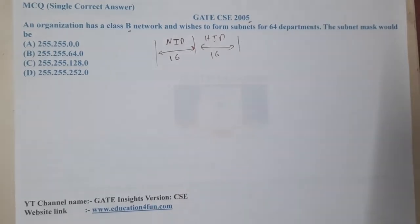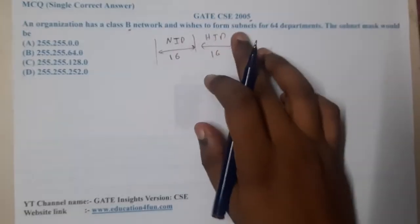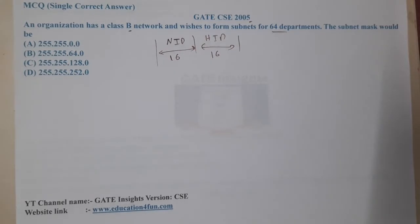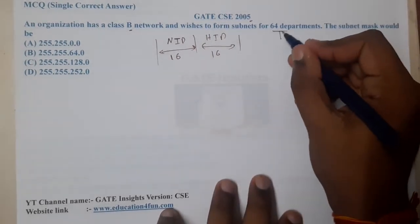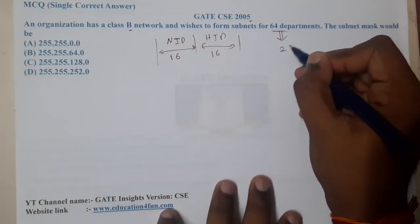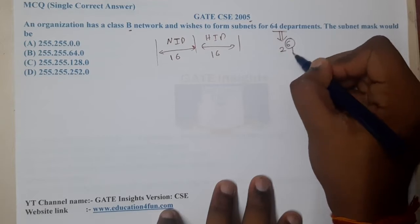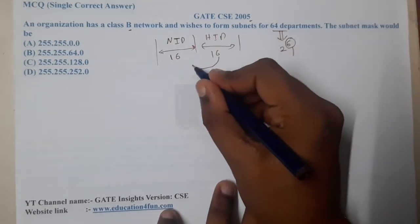And we are wishing to form 64 subnets. Whenever we talk about subnets, what is 64? It is nothing but 2 power 6. So indirectly, 6 bits are transferred from here to here.